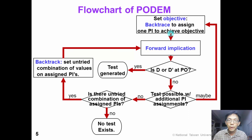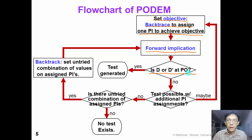Now let's see the flowchart of the PODEM algorithm. Initially, we set an objective. We backtrace to assign one primary input to achieve our objective. Then we perform a forward implication, which is simply a logic simulation. If D or D' has reached at the primary output, then we generate the test successfully. Otherwise, if there is still no D or D' at primary output, we can try to assign more primary input.